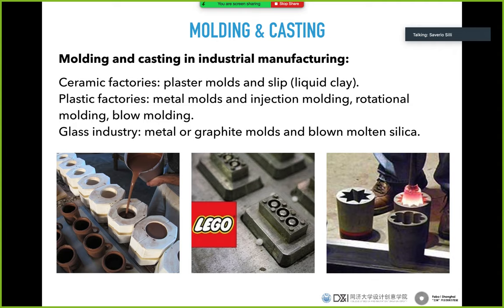Some examples of molding and casting in industrial manufacturing: ceramic factories use plaster molds and slip casting. You use liquid clay, fill your mold with it, move the mold around, then remove the clay from the mold, leaving only a thin layer of liquid ceramic on the internal surface of the mold. Then it dries up and you can fire it.